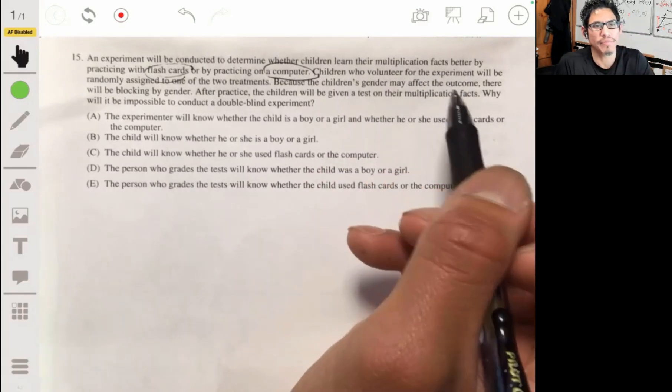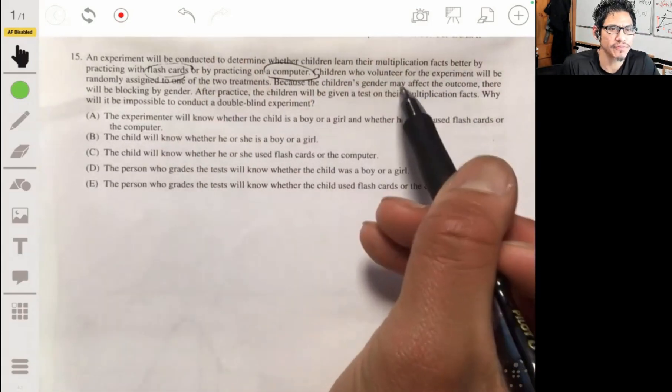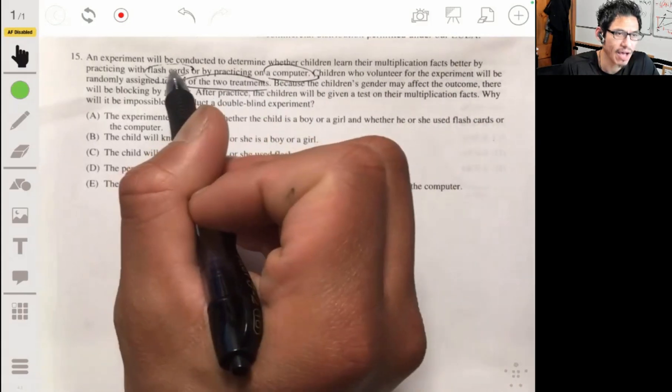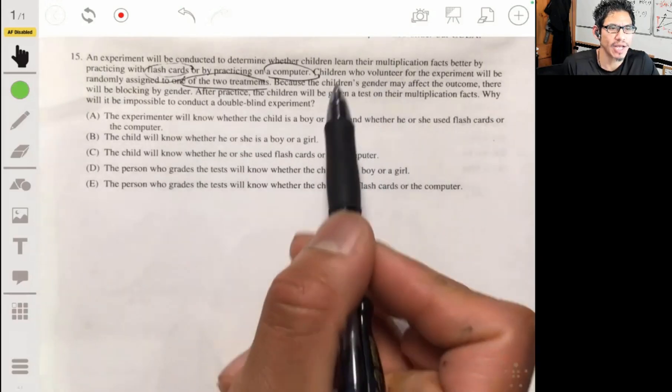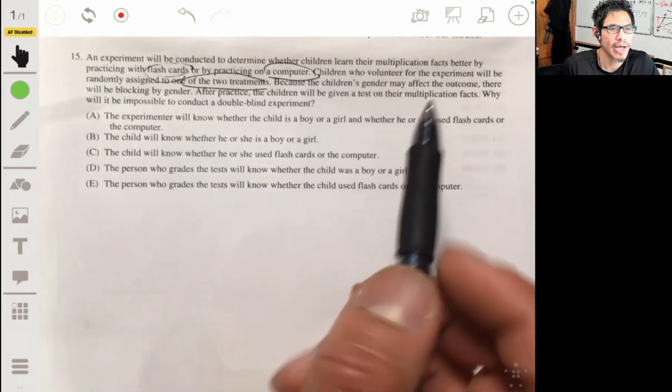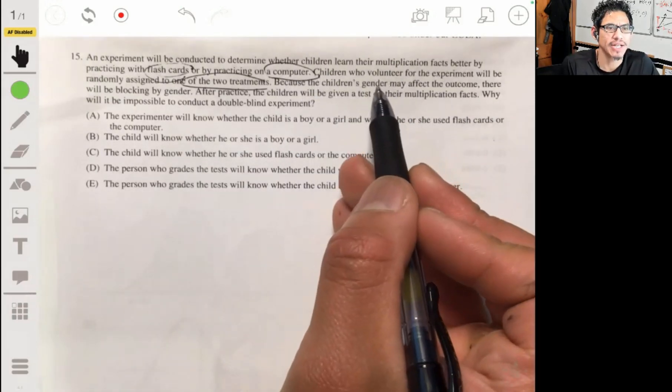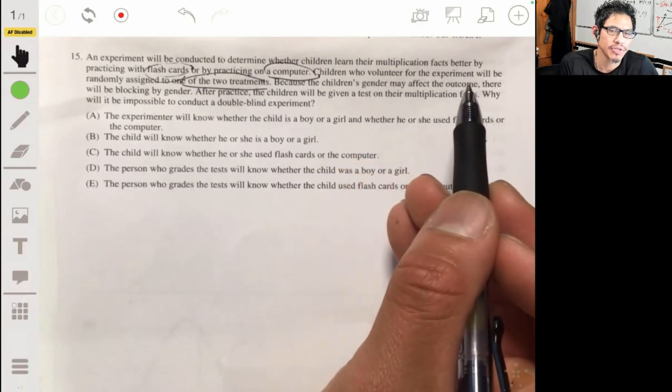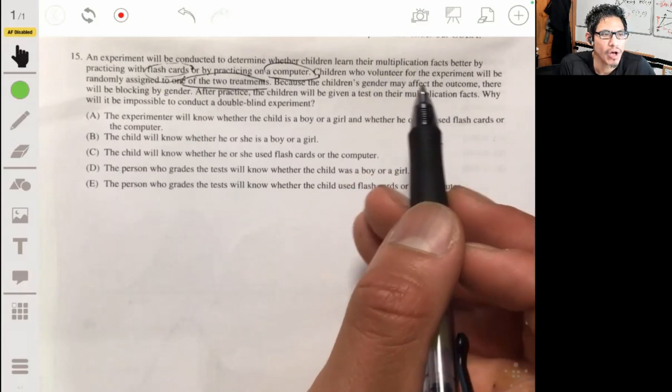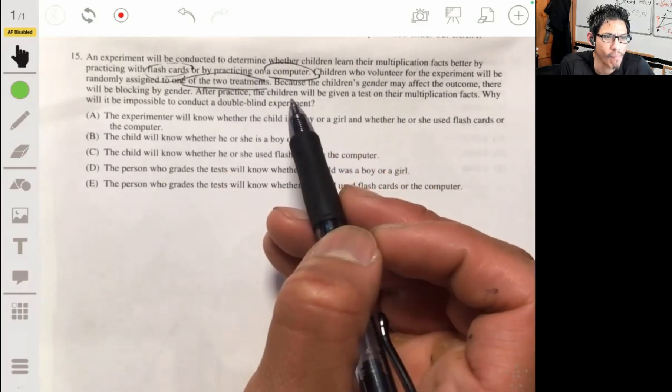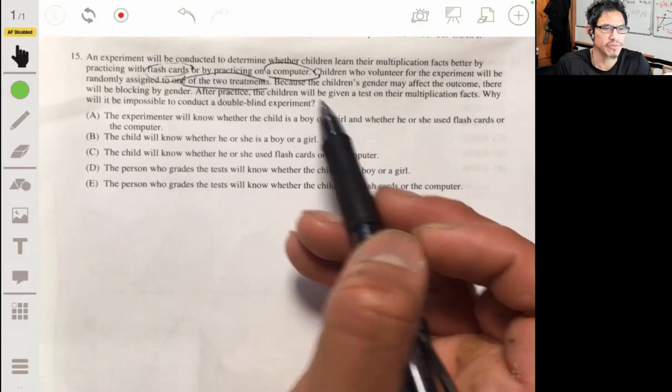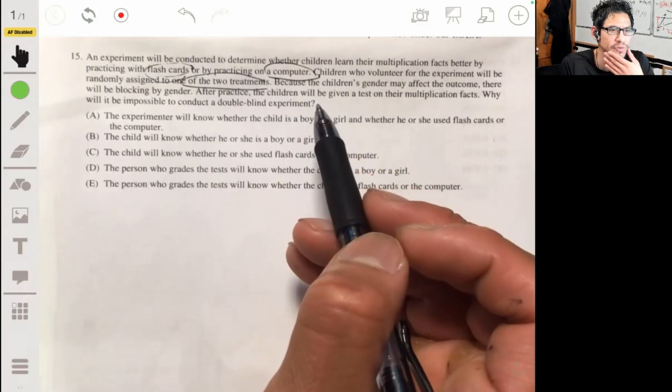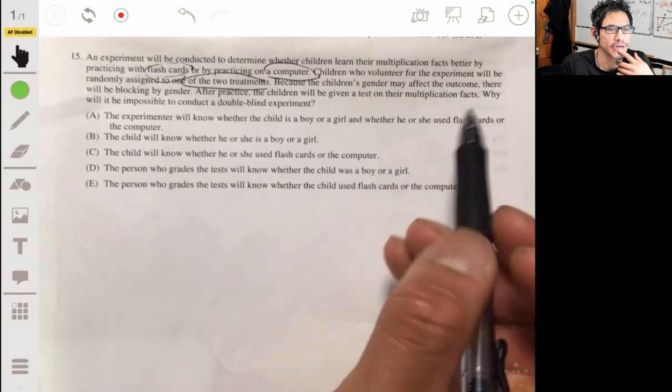So they say children are going to have some children that volunteer for the experiment, and they're going to be broken into one of two groups. So one of them is going to have the flashcards, and the other group is going to have the computer. And they're mentioning that because the children's gender may affect the outcome, how well they will do, they're going to block by gender. Then after they do their practice with the flashcards and computer or computer program, then they're going to take a test.